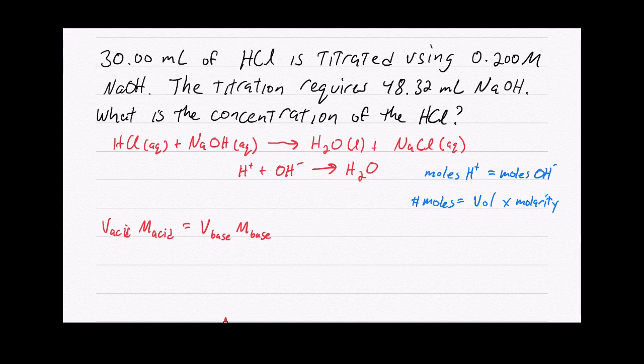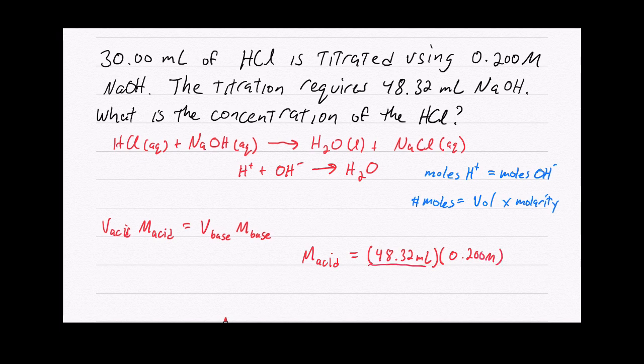We can say that the molarity of the acid, if we do a little bit of rearrangement, is going to be equal to the volume of the base, which is 48.32 milliliters, times the molarity of the base, 0.200 molar, divided by the volume of the acid, which is 30.00 milliliters.